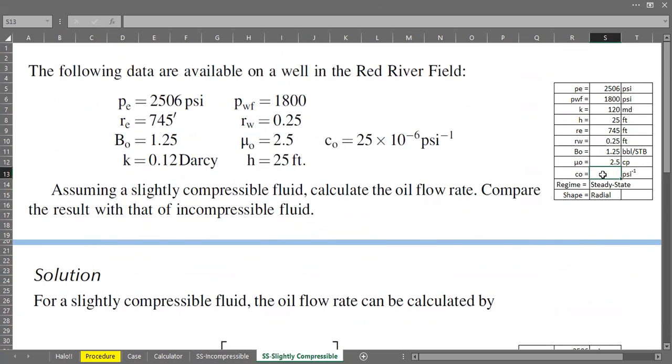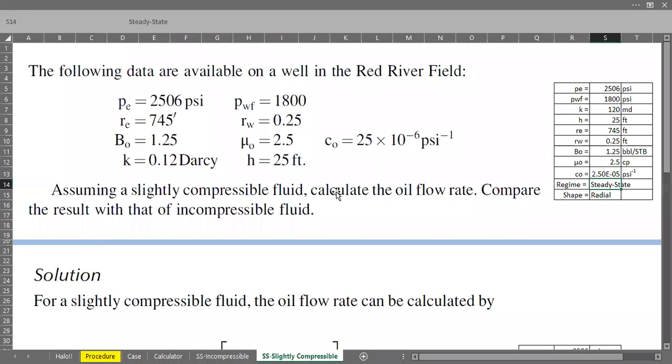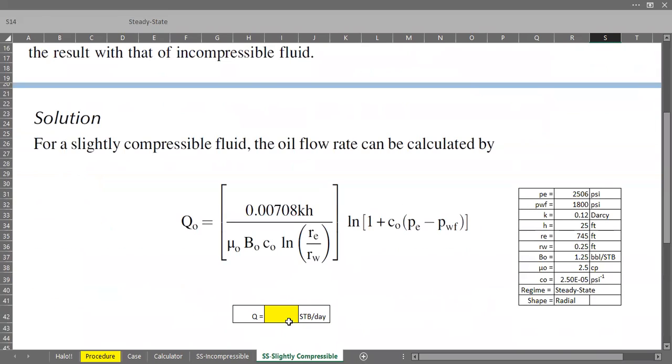the oil compressibility is 25 multiplied by 10 to the power of minus six. So in Excel, I can type in like this 25 e to the power of minus six. And it will change directly to 2.5 multiplied by 10 to the power of minus five. So they are the same 25 multiplied by 10 to the power of minus six. It's the same with 2.5 multiplied by 10 to the power of minus five. Okay, so let's calculate. I will use this equation.